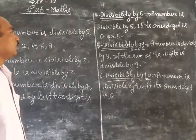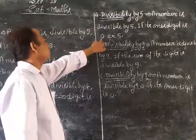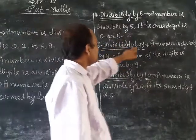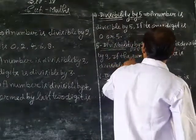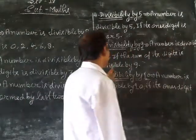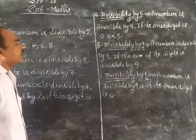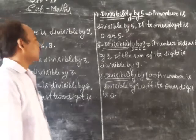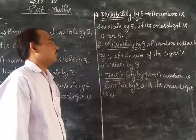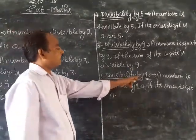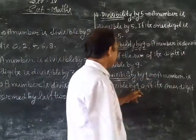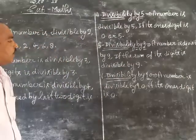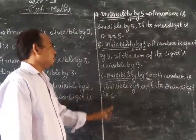A number is divisible by 5 if its ones digit is zero or five.